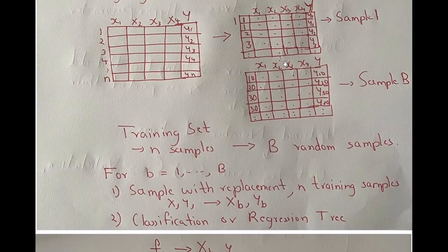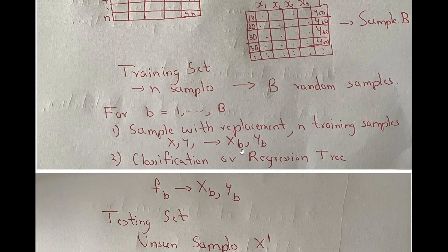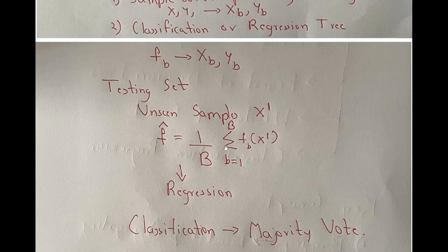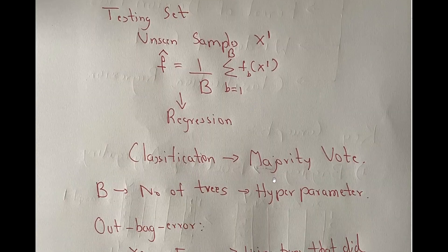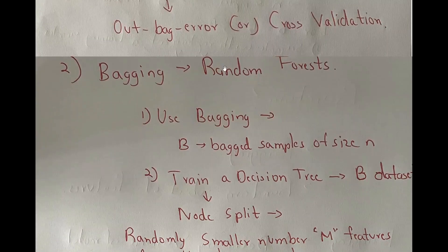In bagging, you create bagged datasets using random sampling with replacement. For each bagged dataset, you create a classification or regression tree depending on the problem. For regression you average the output on unseen data; for classification you do a majority vote. The number of trees is a hyperparameter, and we use out-of-bag error or cross-validation to find the optimal value. Now, how do we move from bagging to the random forest concept?